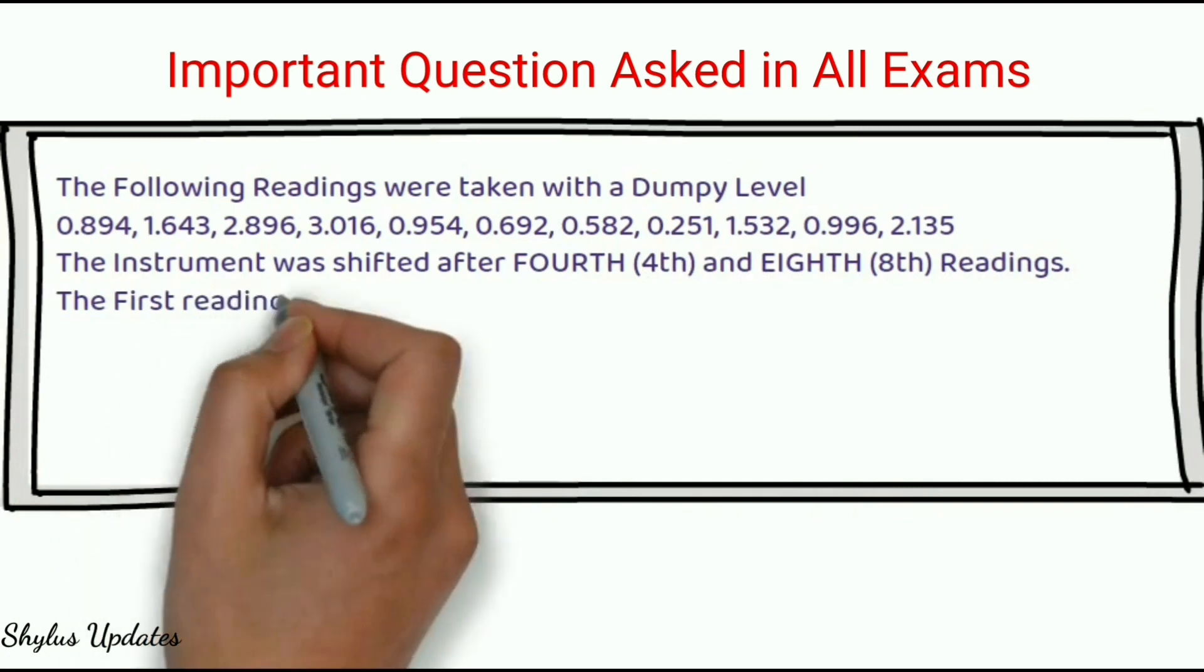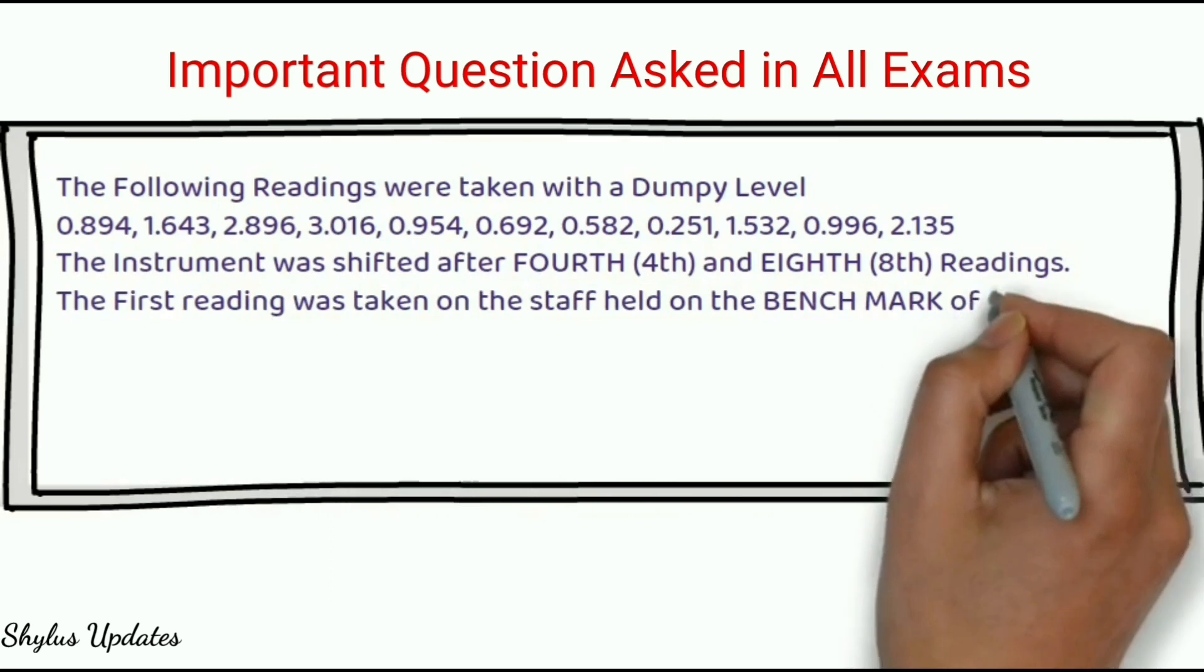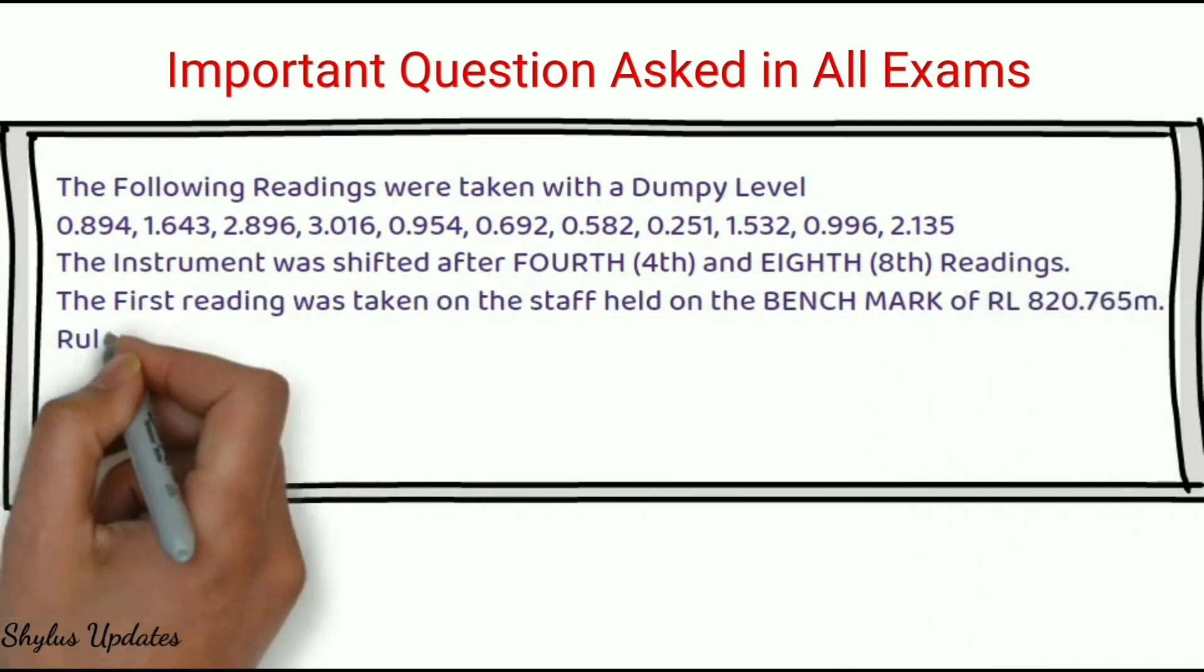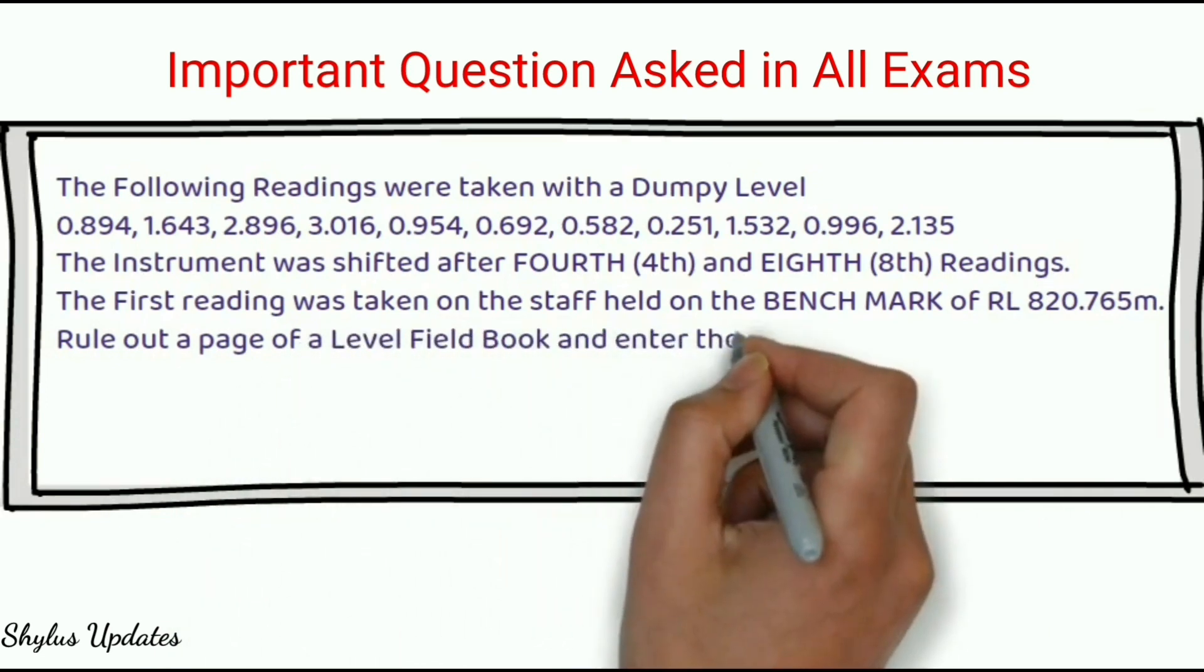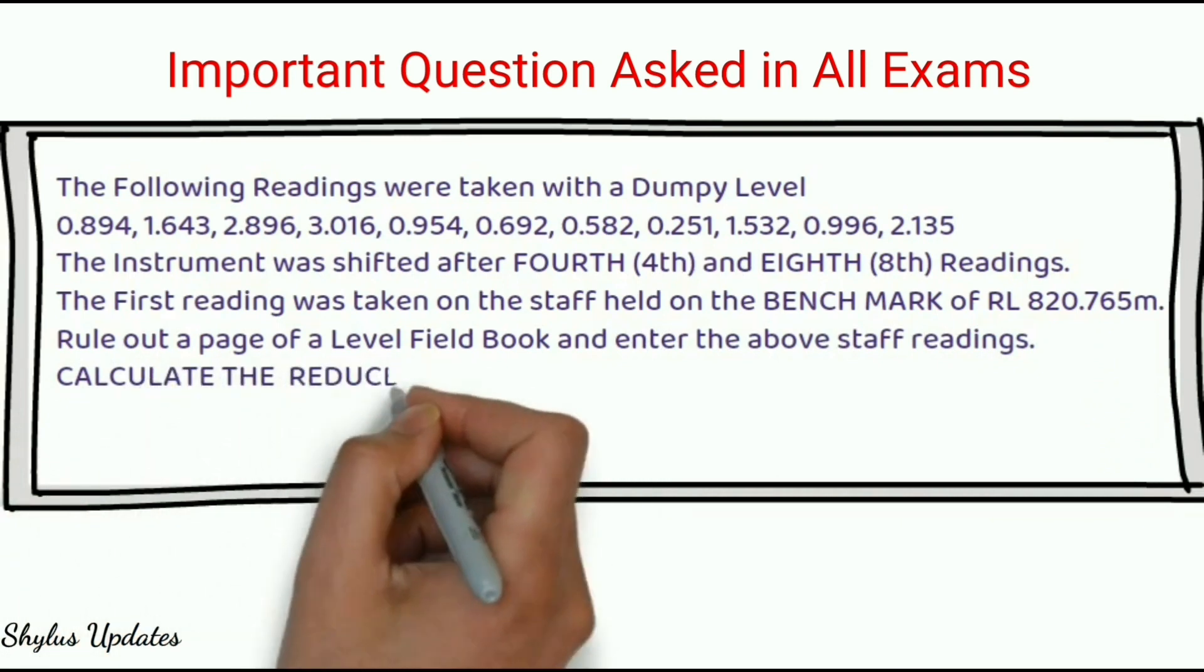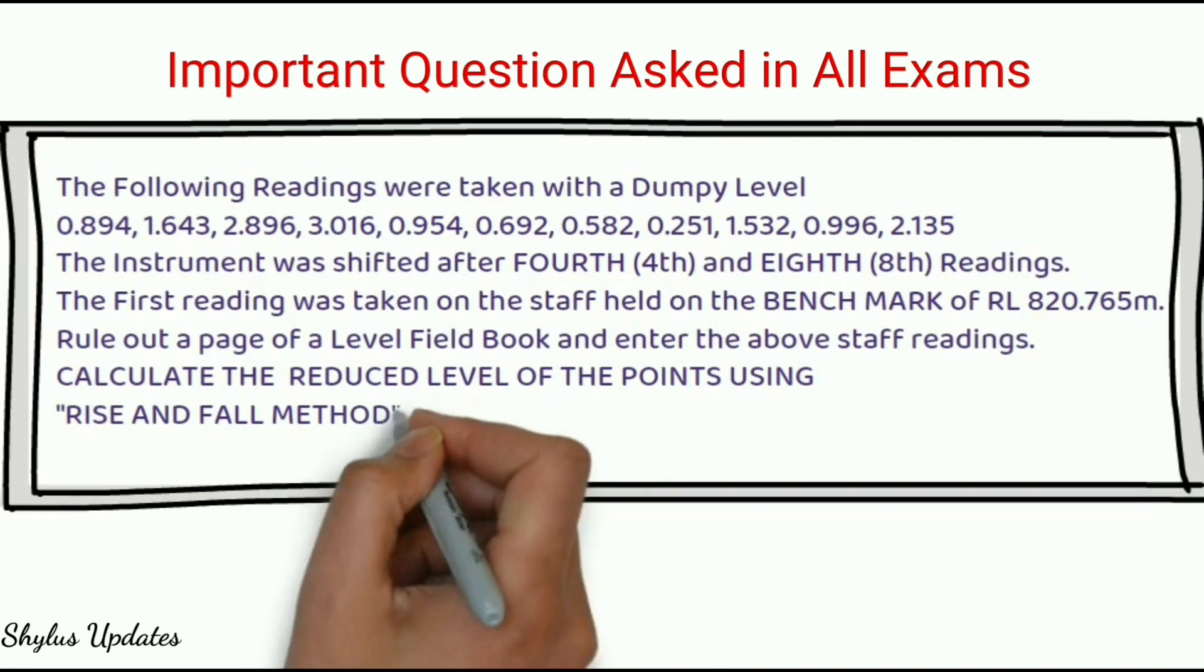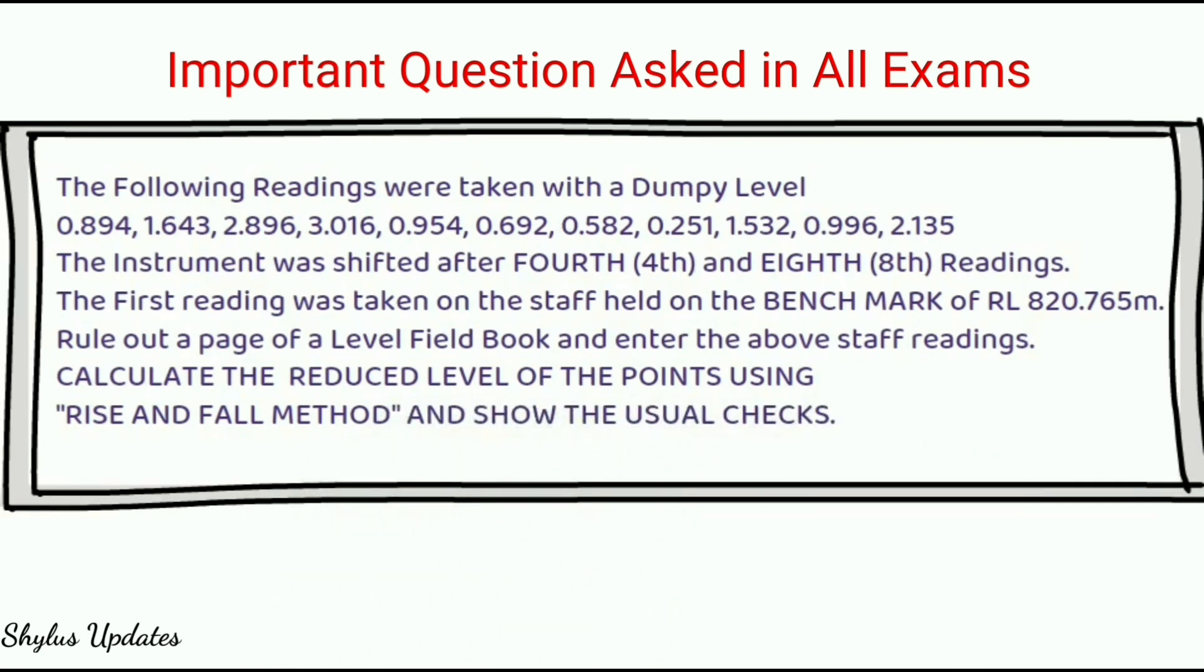The first reading was taken on the staff held on the benchmark of reduced level 820.765 meter. Roll out a page of a level field book and enter the above top readings. Calculate the reduced level of the points using rise and fall method and show the usual checks. This is an important question which has been asked almost in every examinations.